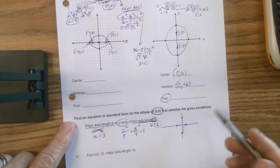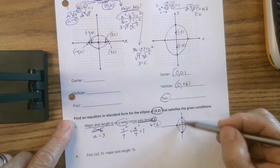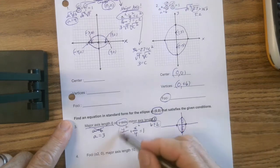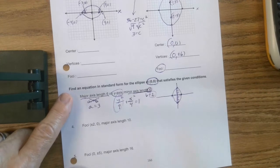Now it didn't say to graph it, but I did. So let's go ahead and draw it in there. Notice the major axis is here, and that's good because we've got the larger number underneath the y squared. Okay, next one.